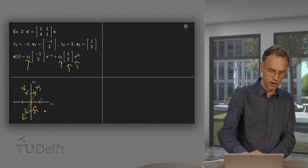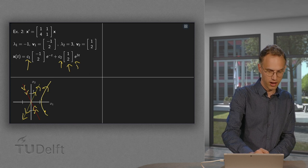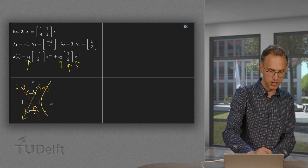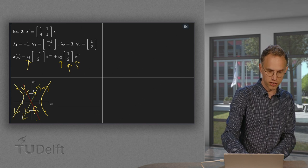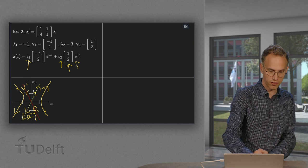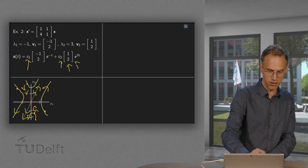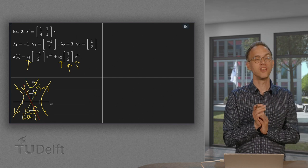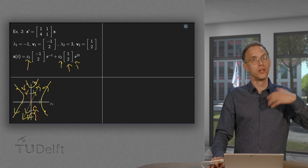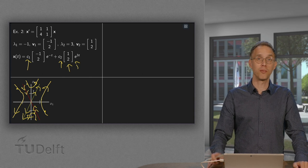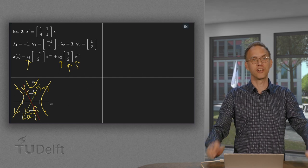By following the arrows — from the red eigenvector line toward the yellow — you can sketch the full phase space. Starting from various initial points and following the arrow directions, the trajectories curve from the stable eigenvector direction toward the unstable one. In this way, you can make a sketch of the phase space using the information from eigenvalues and eigenvectors.